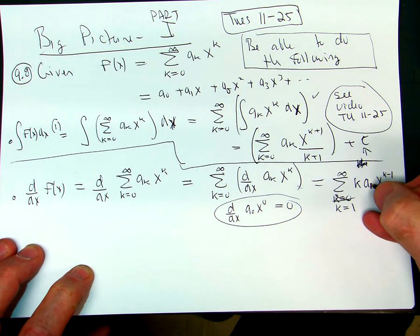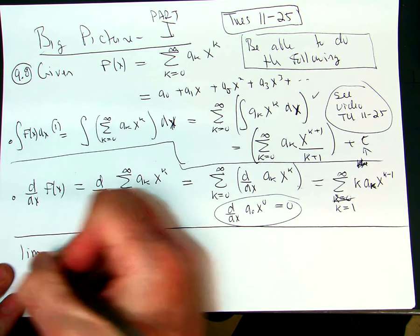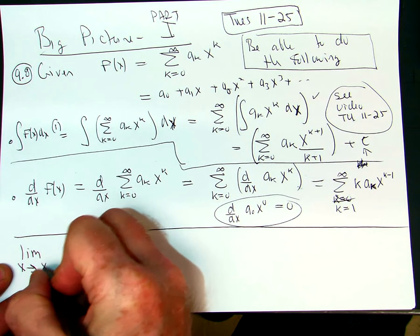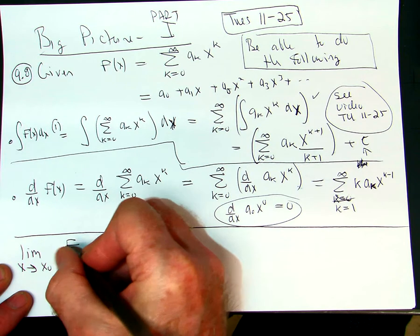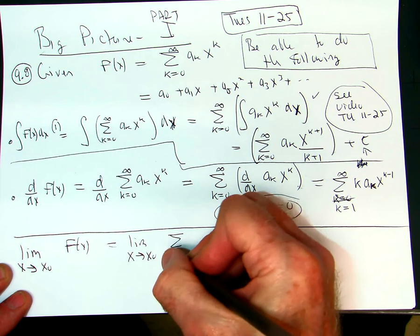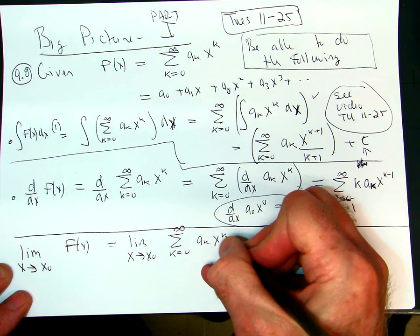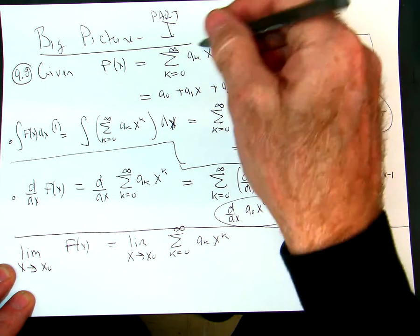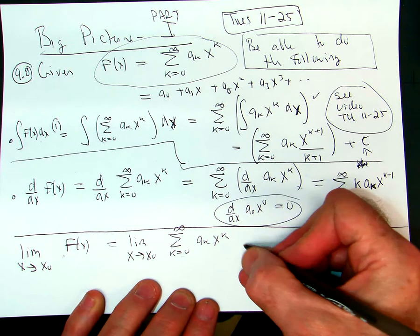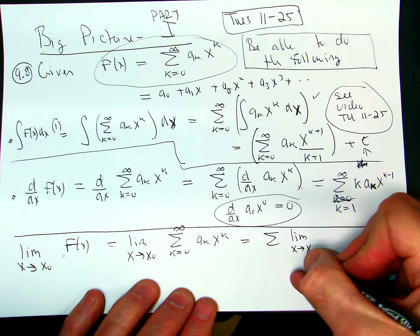You might have to take a limit. Your limit could be as x goes to some number x_0 - we don't know what that number is. So you take the limit of f(x), you take the limit of the series. Remember, all we know about f(x) is this - that's the only formula we have, which is why we have to do all these things. To take a limit of f(x), we take the limit of the power series. The way you do that is you just take the limit of each term.